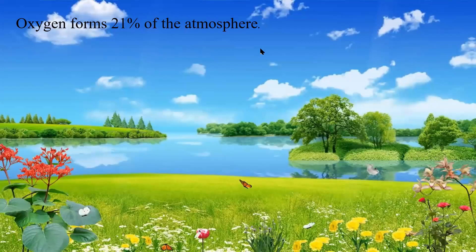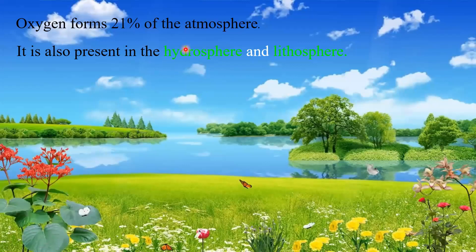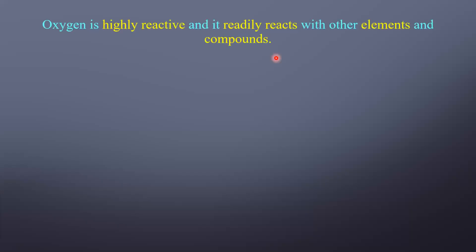Oxygen forms 21 percent of the atmosphere and it is not only available as elemental oxygen — it is also present in the hydrosphere and lithosphere. Your oxygen is present in water: the formula of water is H₂O, so O is nothing but oxygen. Even your lithosphere — your land — also comprises oxygen. So oxygen is not only in the atmosphere but also in the hydrosphere and lithosphere.